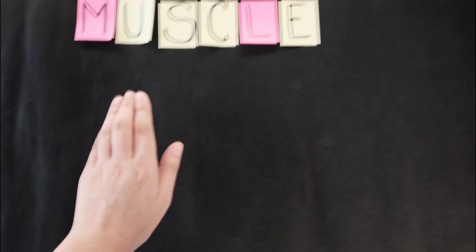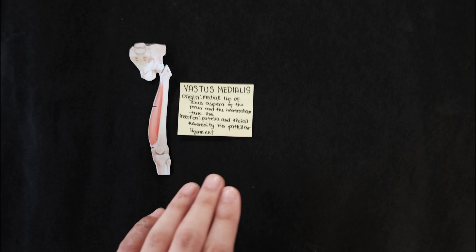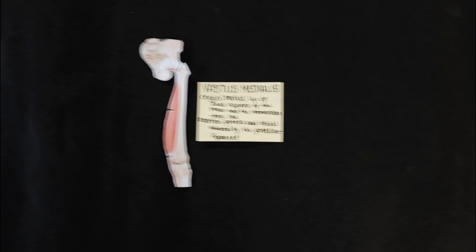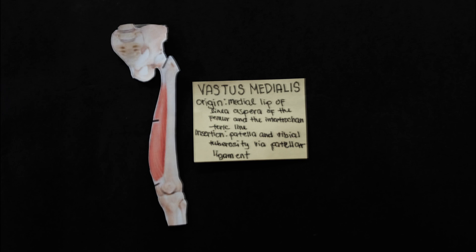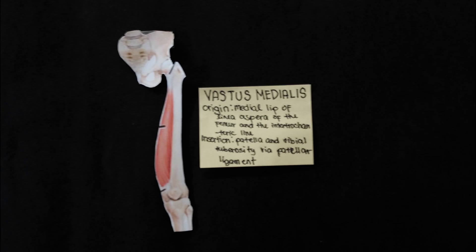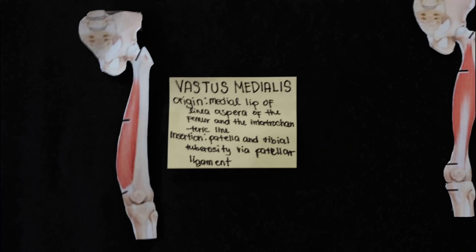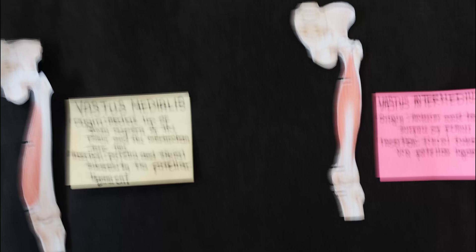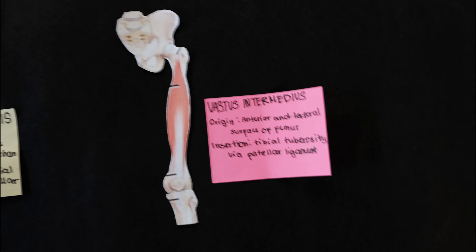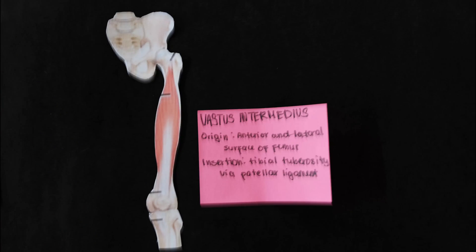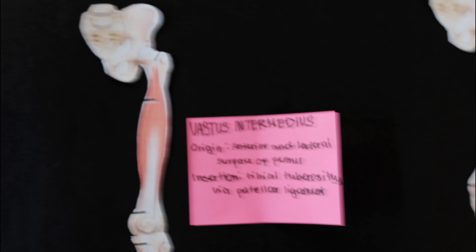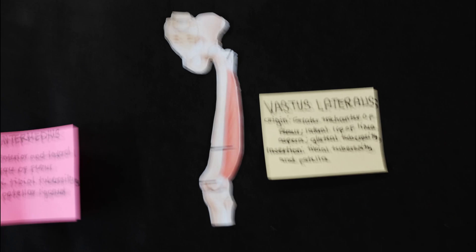Knee extensors. Vastus medialis: origin is the medial lip of the linea aspera of the femur and the intertrochanteric line; insertion is the patella and tibial tuberosity via the patellar ligament. Vastus intermedius: origin is the anterior and lateral surface of the femur; insertion is the tibial tuberosity via the patellar ligament.